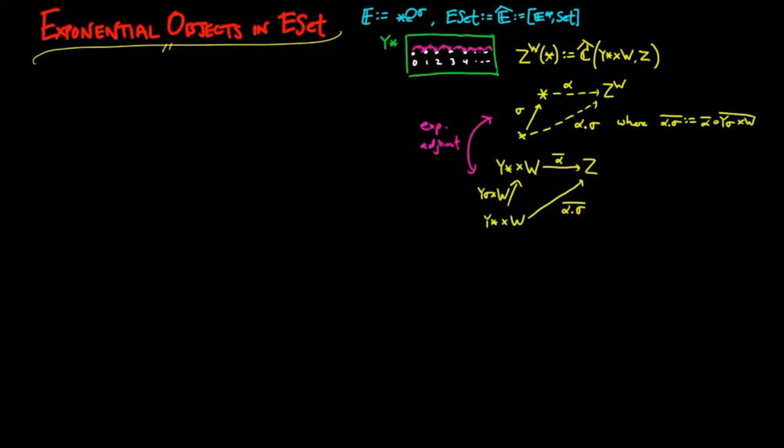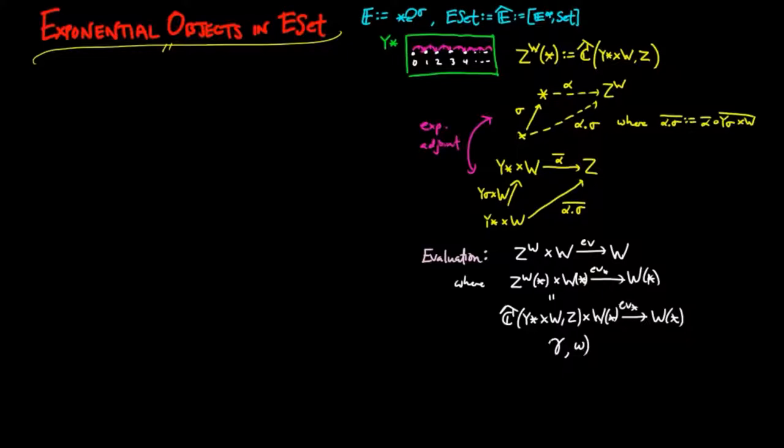The right action by sigma can be described by precomposition of the product of the morphisms Y-sigma and the identity on W. Evaluation is an evolving set morphism from the product of Z to the W and W to W, where a natural transformation gamma from the product of the representable in W to Z and a figure little w in big W is taken to gamma evaluated on the identity and W.